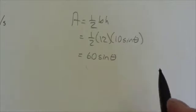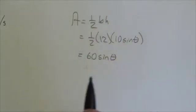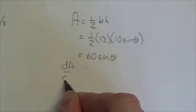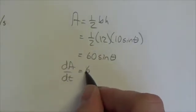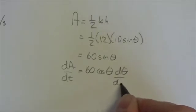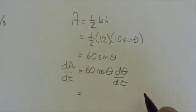So now I can take the derivative of this and I will get a relationship between the rate of change of area and the rate of change of the angle. So dA/dt is going to equal 60 cosine of θ times dθ/dt.